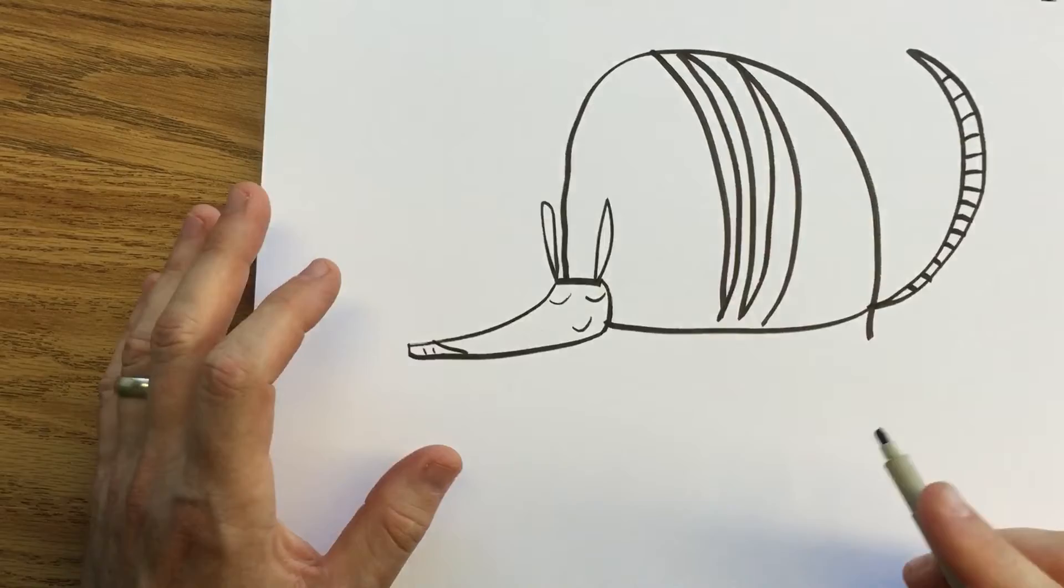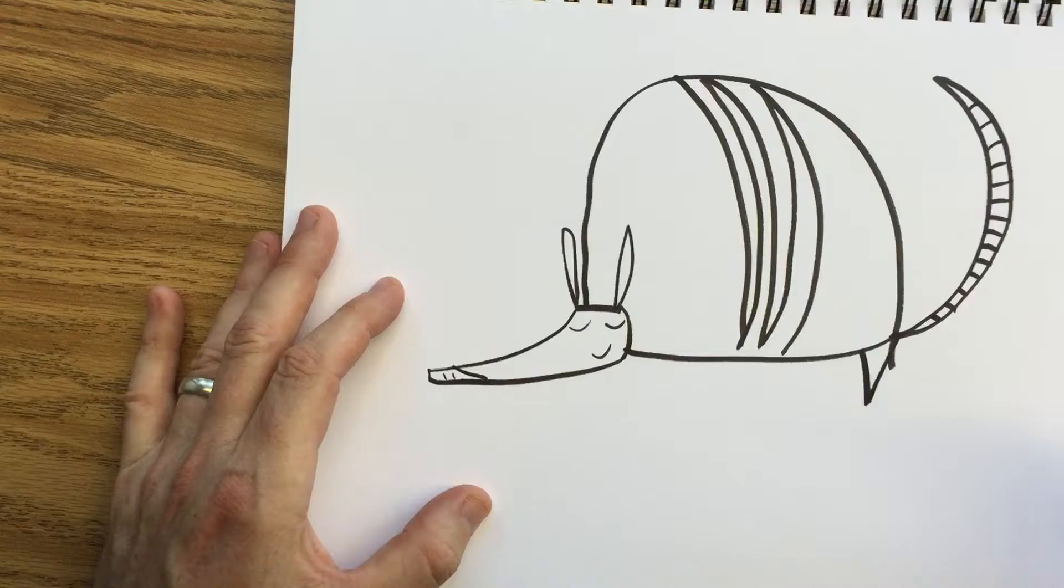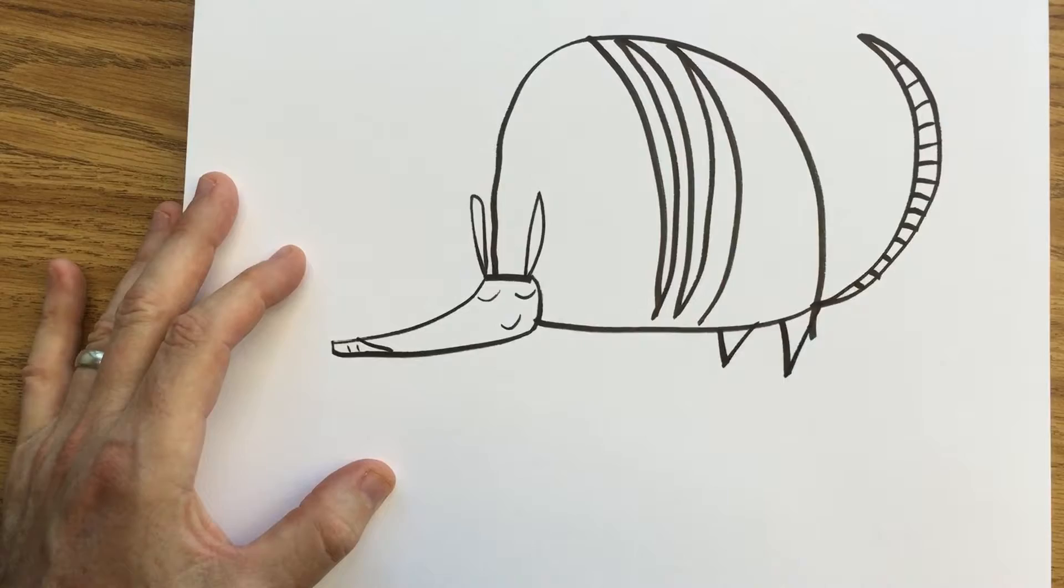And then right at the back where the tail meets the giant half of a football helmet or a bald man's head, we're just going to do a nice V. And just a little bit in from that V, not too far in, another little V.